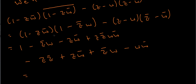Now you might notice some cancellation of terms. I've got a minus zw̄ and a plus zw̄, so those cancel. And I've got a minus z̄w and a plus z̄w, so those cancel as well.